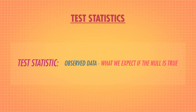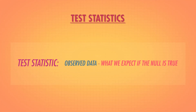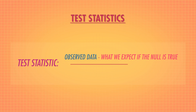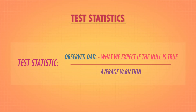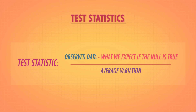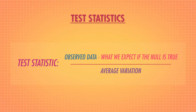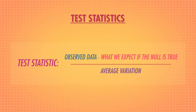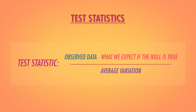That's why test statistics look at the difference between data and what we'd expect to see if the null hypothesis is true. But they also include some very important context — a measure of the average variation we'd expect to see, like how much novice or pro swimmers differ. Test statistics help us quantify whether data fits our null hypothesis well.